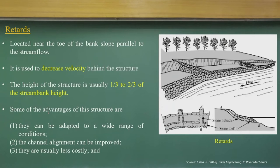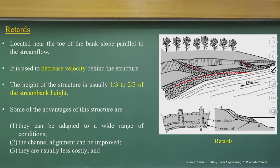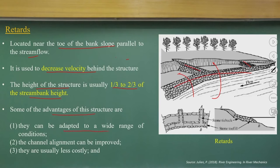Many times we also have retarders. Retarders create flow parallel to the bank — they are not embankments, they allow flow to overtop. It is a structure of bank slope parallel to the stream, used to decrease the velocity behind the structure. As flow exceeds at those places, velocity is reduced. The height of the structure is usually one-third to two-thirds of the stream bank height. Advantages include adoption over a wide range of conditions, improved channel alignment, and lower cost. You are not protecting the bank directly but creating a retarder away from the bank to reduce velocity in the erodible zones.